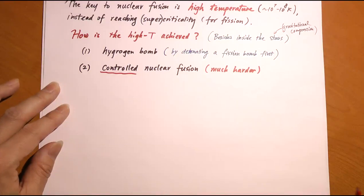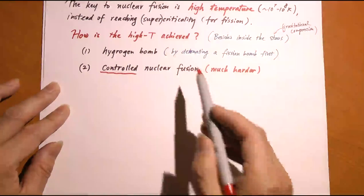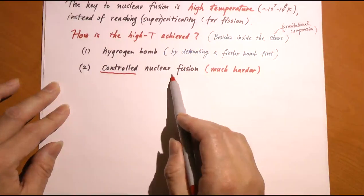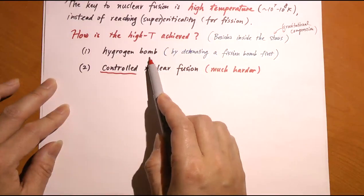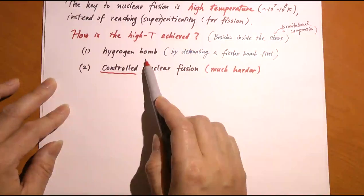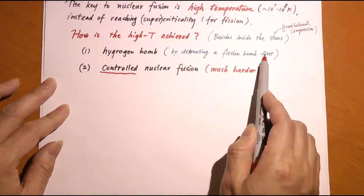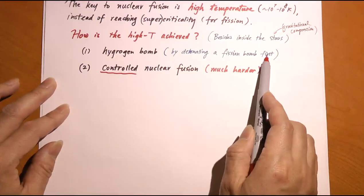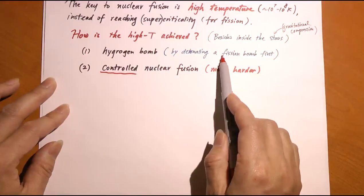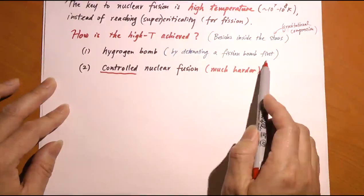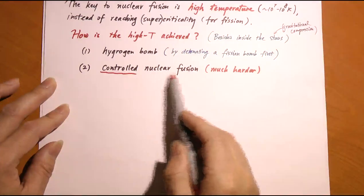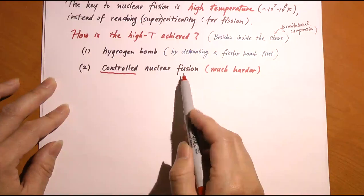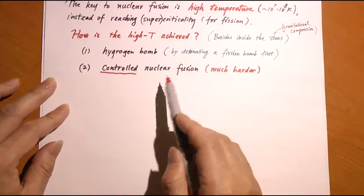The military use is the hydrogen bomb, also known as a thermonuclear device—'thermal' referring to the high temperature required. In a hydrogen bomb, the fusion temperature is achieved by first detonating a conventional fission (atomic) bomb. Inside every hydrogen bomb there is a fission bomb that detonates first, creating the temperature needed for fusion, which greatly increases the yield of the bomb.